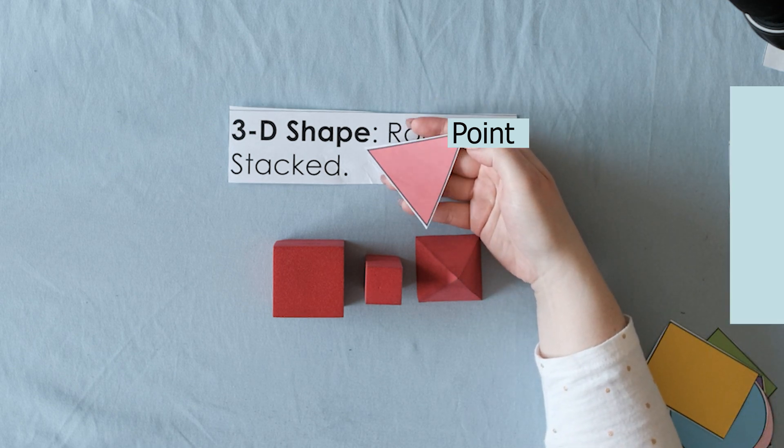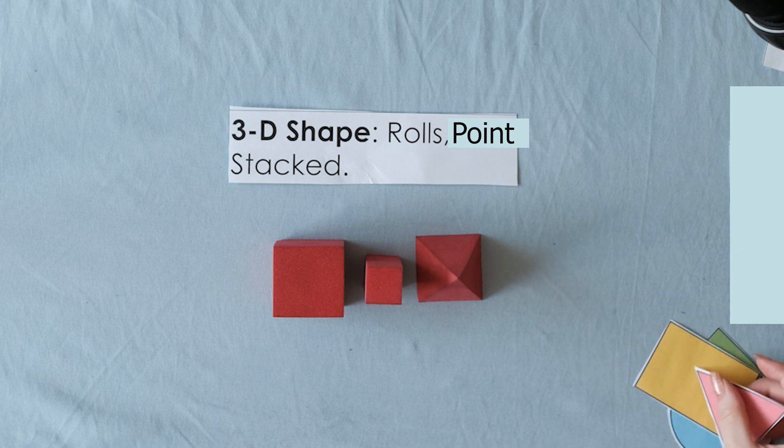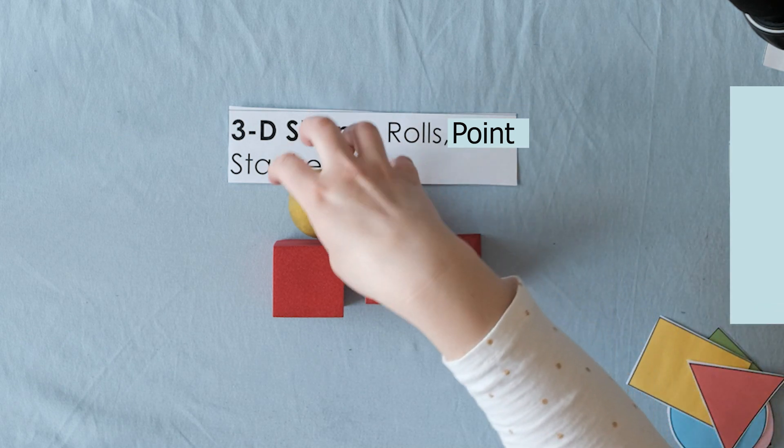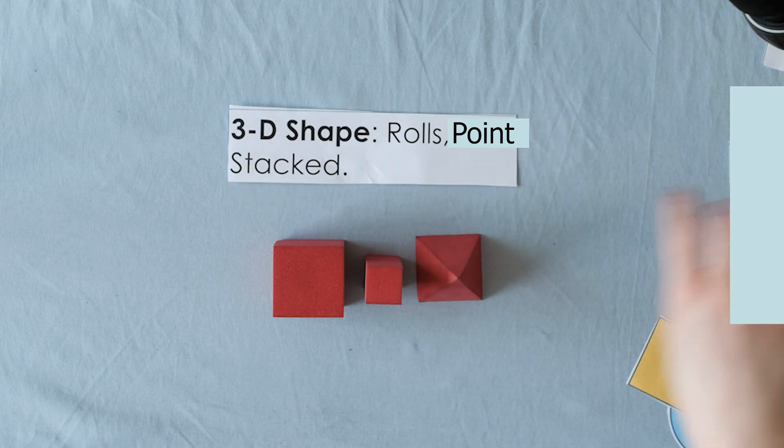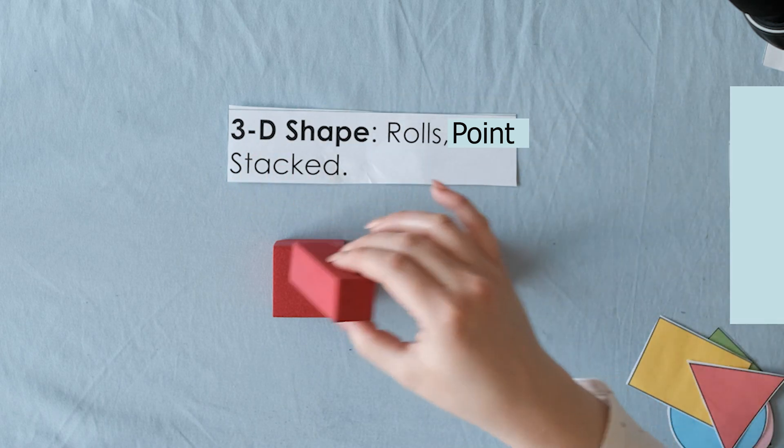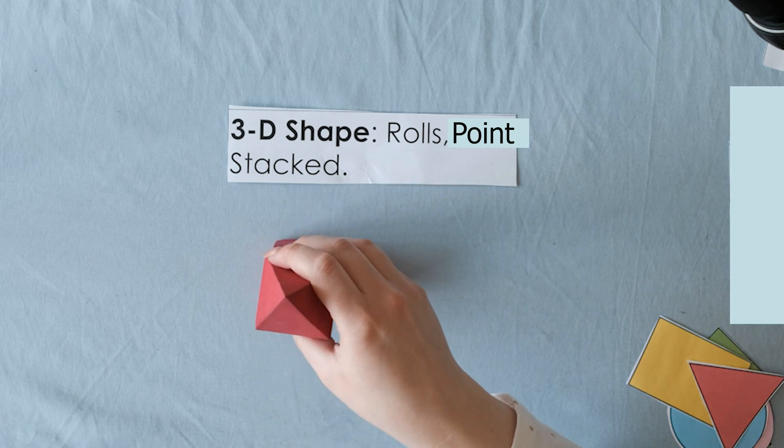So yeah, they're very different, right? So 3-D shapes roll like this one for example. They can roll around. They also have points and they can be stacked. So I can put them on top of one another just like that.